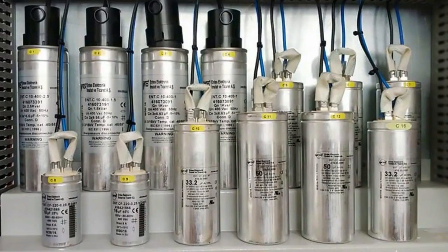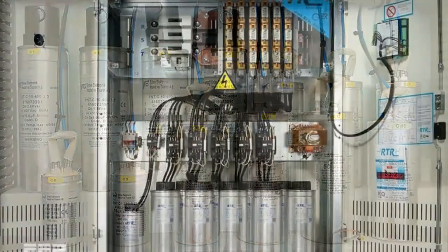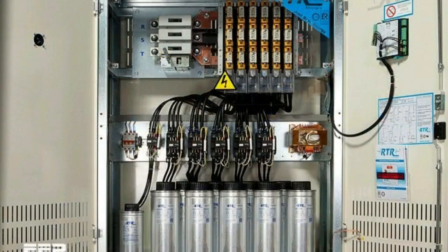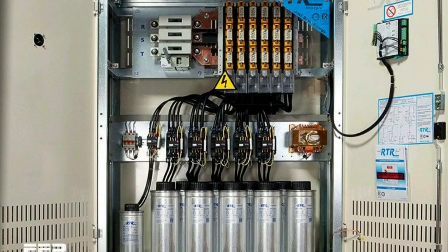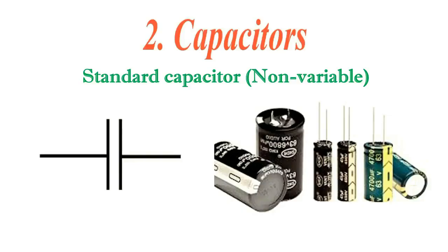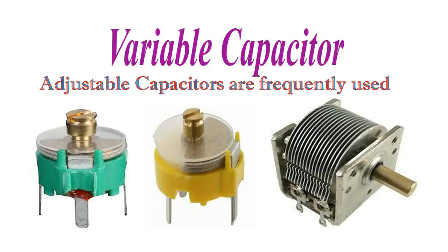Larger capacitors are used for energy storage in applications such as strobe lights or for power factor correction in AC power distribution systems. Standard capacitors have fixed values of capacitance, but adjustable capacitors are frequently used in tuned circuits.